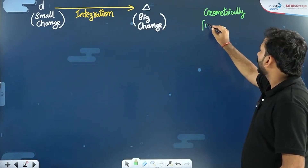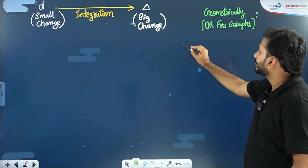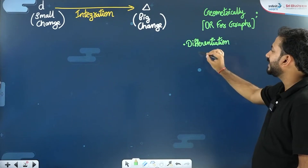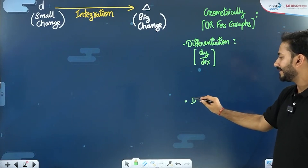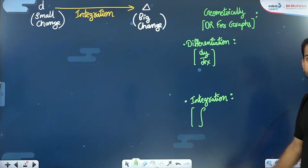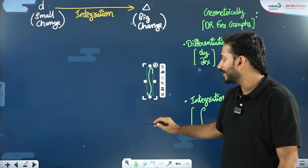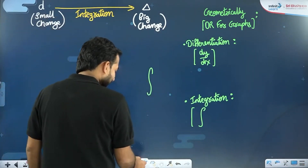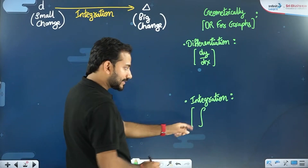Geometrically, for graphs, differentiation gives you something. The notation I told you is dy by dx — that is how you denote differentiation. And for integration, the symbol or notation — how do you write it? You write this sign: it looks like an S but it is not S. I stretch it like this. This is the sign of integration — it looks like an extended S but the meaning is not at all the same.